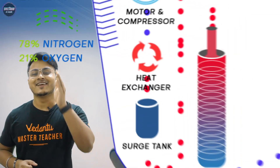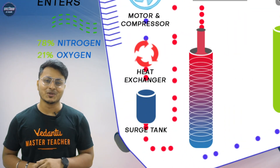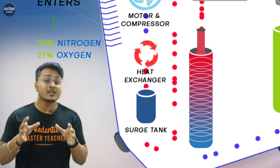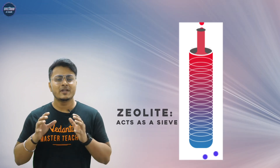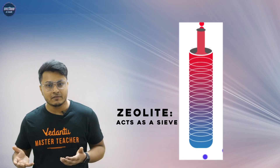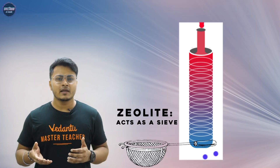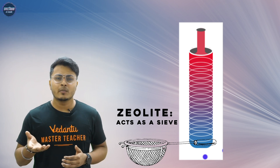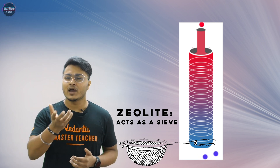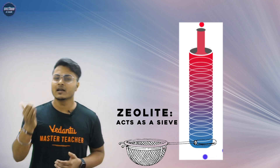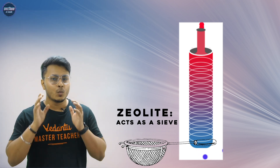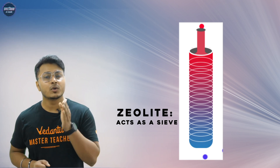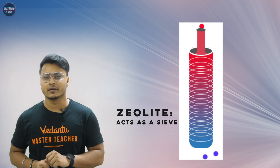Now this air enters into a cylinder which is made up of a porous crystal called zeolite, which acts as a sieve. Sieve maane chalni — jo hum chai banate waqt chai ko chai patti se alag karne ke liye use karte hain. Waise hi, yahan par zeolite nitrogen ko alag karta hai.